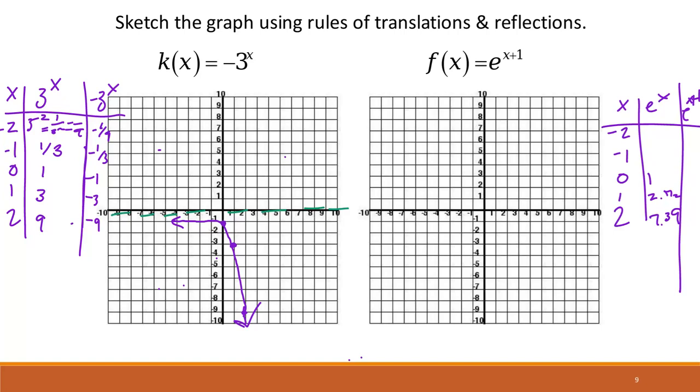So our x's would then be negative 1, 0, and 1, right? So if I wanted to have my asymptote, it didn't move because I didn't go up or down, but I did shift to the left.